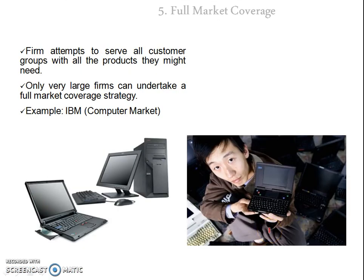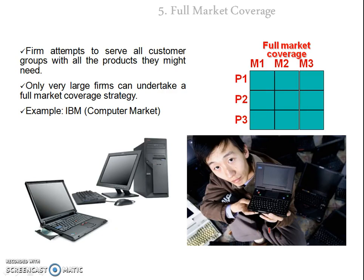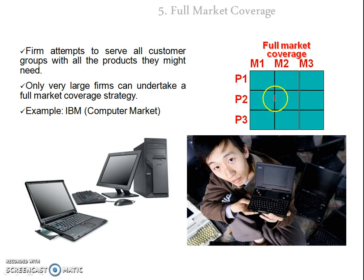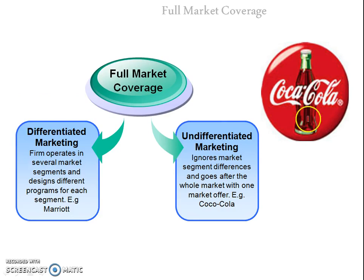The last strategy is full market coverage, where the company covers the whole market across all segments and all kinds of customers. IBM is a very good example; this strategy is generally adopted by large-scale firms because they have full financial support and capabilities. IBM covers the whole computer market, manufacturing all types of computer products for all types of customers. Full market coverage has two options: differentiated marketing and undifferentiated marketing.